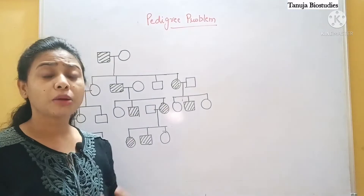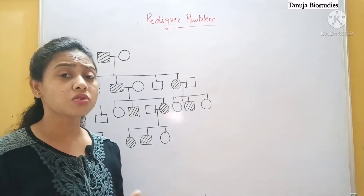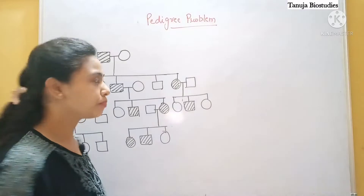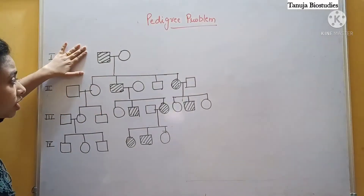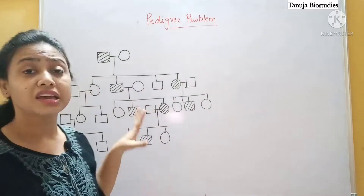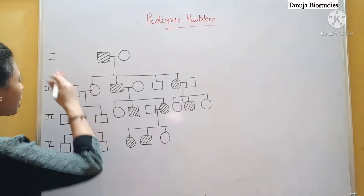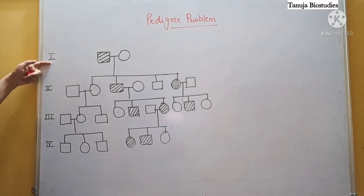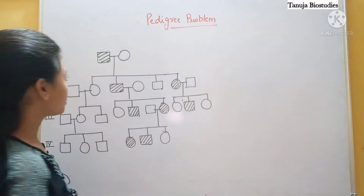Let's solve the problem directly. I am not going to tell you about all the traits - I have already discussed that. Now let's see this chart problem and then we will determine which trait it is. Here we have 4 generations: Generation 1, 2, 3, and 4.